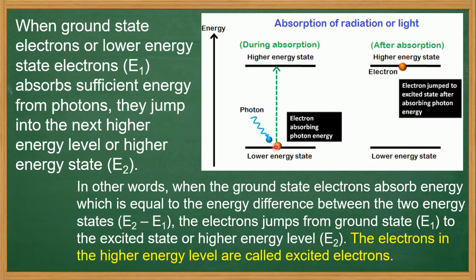When a photon is incident, the electron absorbs the photon energy and jumps to the excited state. In other words, when the ground state electrons absorb energy equal to the energy difference between the two energy states — E2 minus E1 — the electron jumps from ground state E1 to excited state or higher energy level E2.